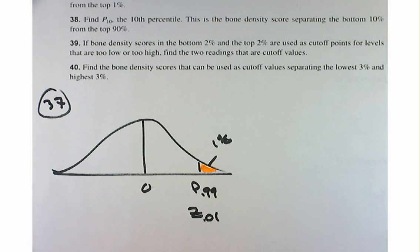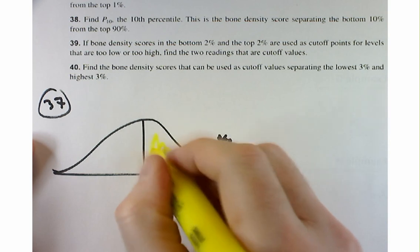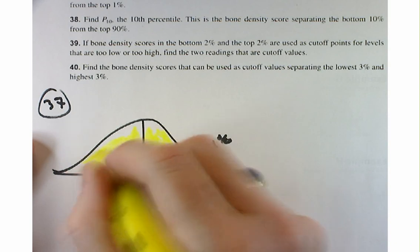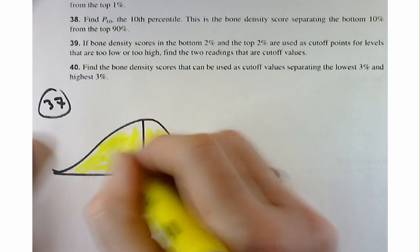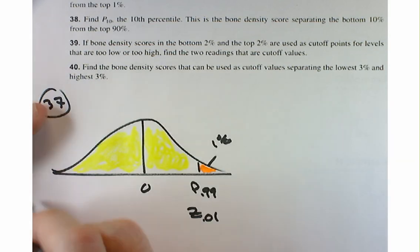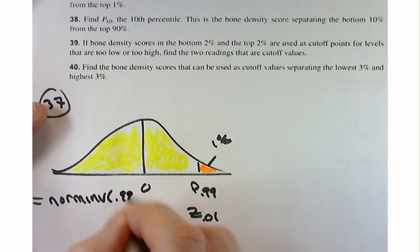How would I look this up in Google Sheets? Google works with the area in the left tail, so how much is in the left tail? 0.99. So we want to find the Z score corresponding to 99% in the left, which is norm inverse of 0.99, 0, 1.